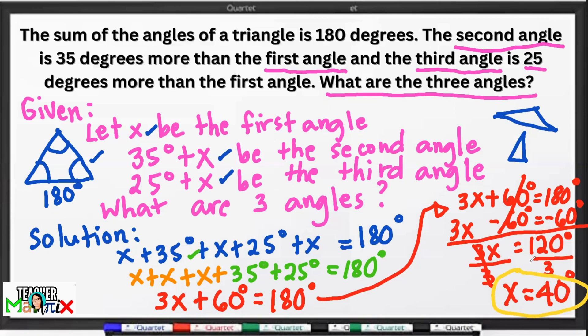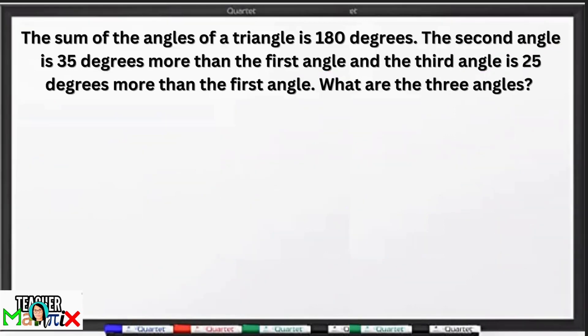Ngayon, paano ba natin malalaman kung yan ay tama? I-check by checking. Since 40 man ang value ng x, mag-checking tayo. I-checking natin ha. Since na-discover naman natin ang value ni x which is 40 degrees. Si 40 degrees, i-substitute natin sa mga angles na described sa problem. Ito yung first angle. Sa first angle, according to the description, is x.